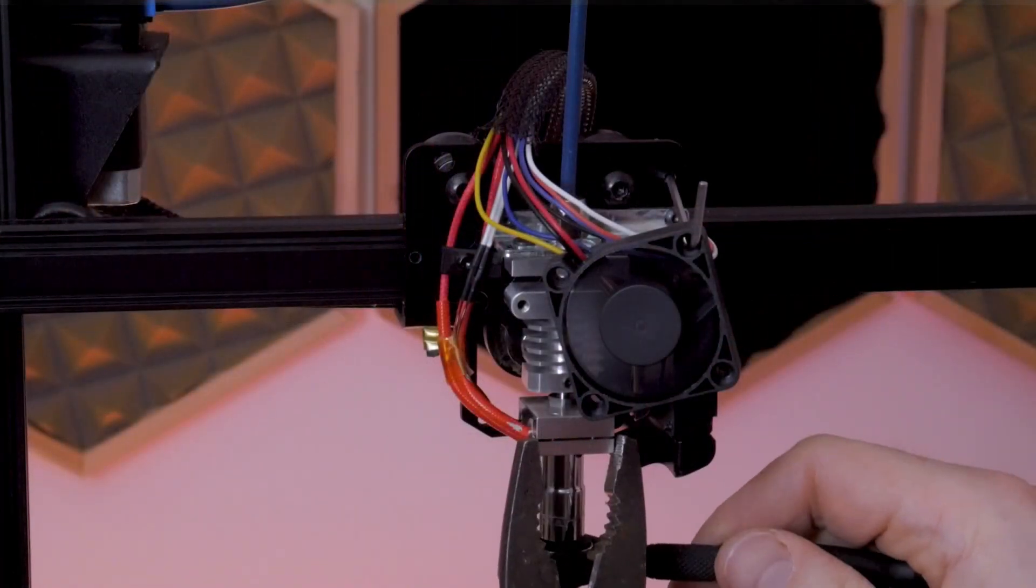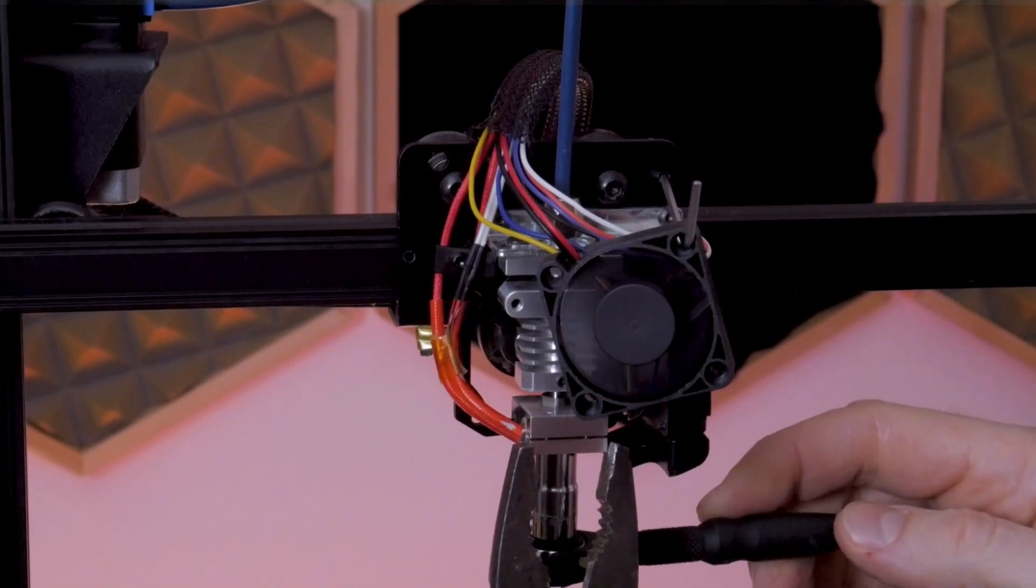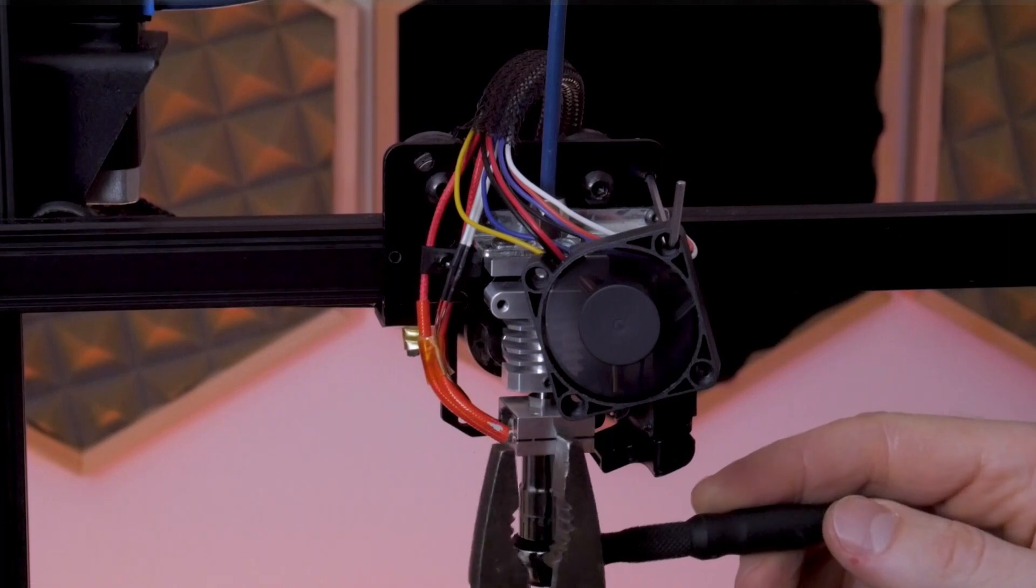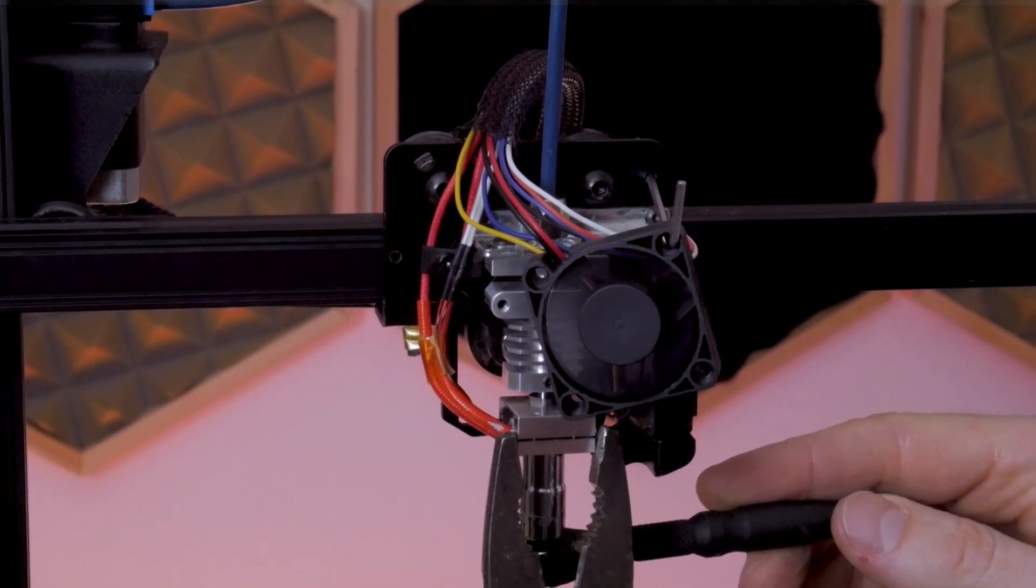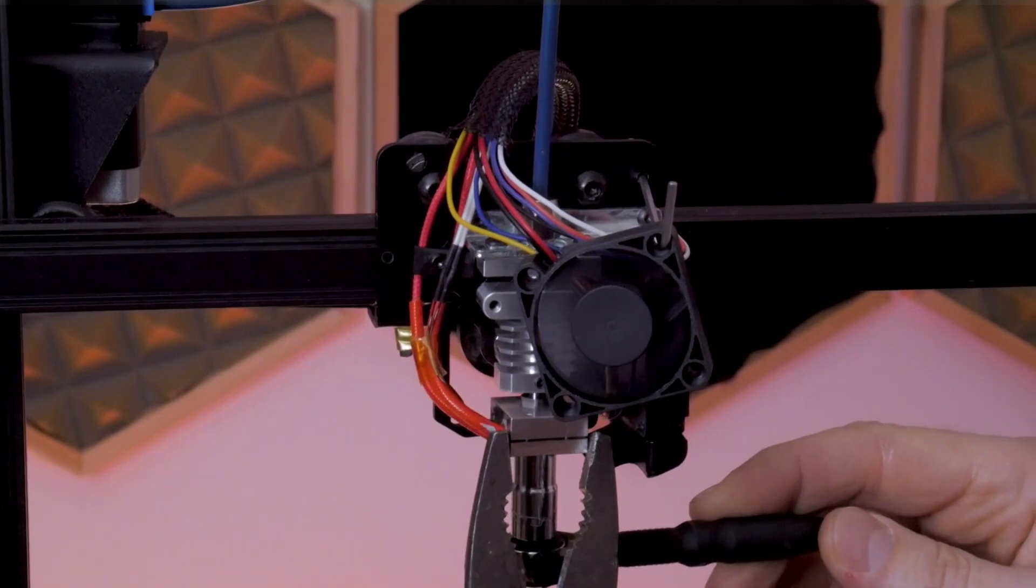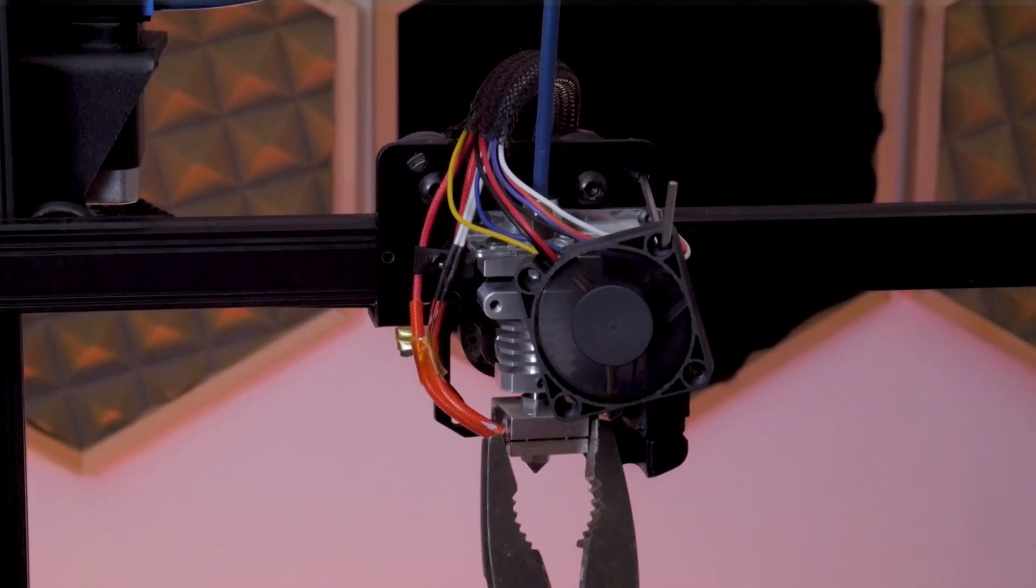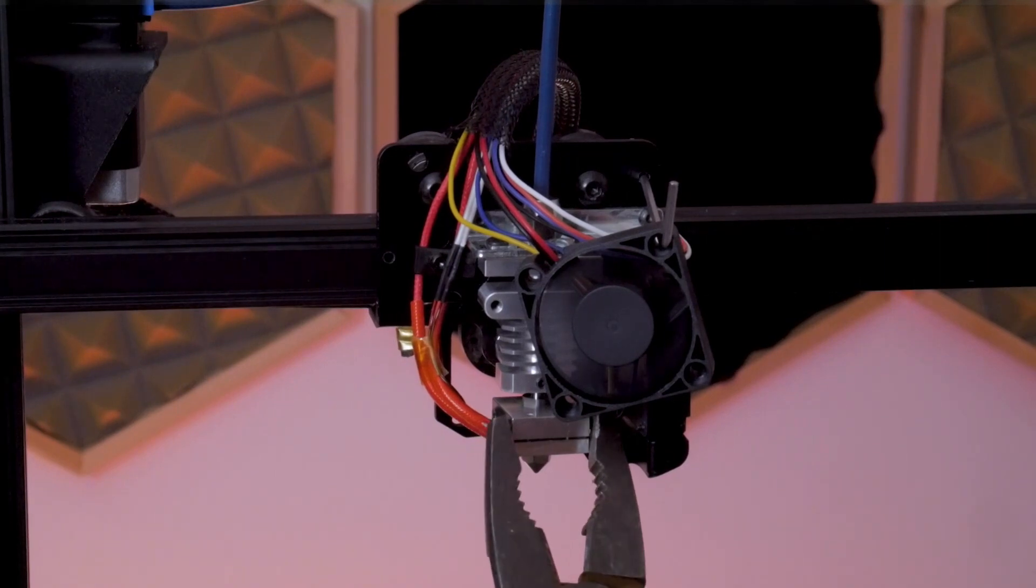If you've never done this before, also keep in mind that you're going to want to try and hold the heater block in place while you torque down the nozzle so that it doesn't twist or move too much. I'm using a set of pliers here, but an adjustable wrench will also work. Try not to damage the wires on the heater cartridge if you're doing it like I'm doing it. Be careful and don't over torque it - it doesn't need to be too tight.